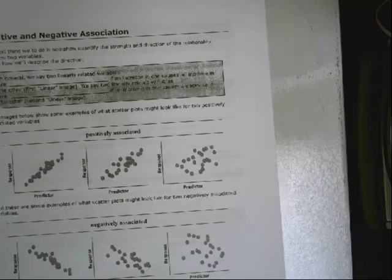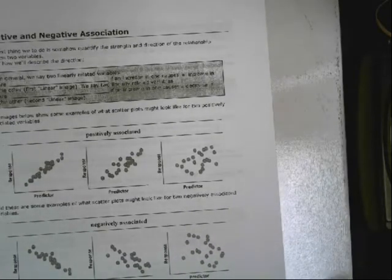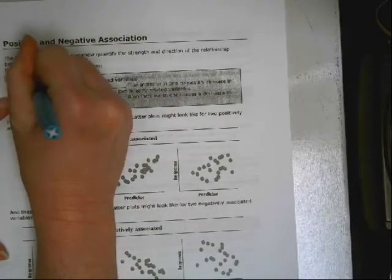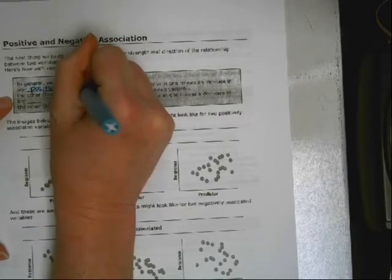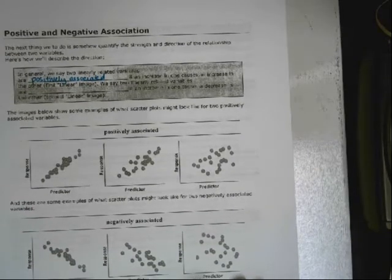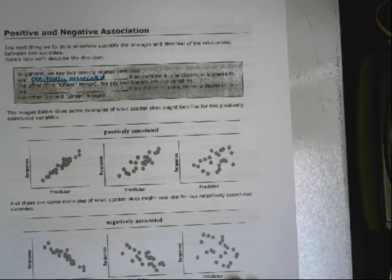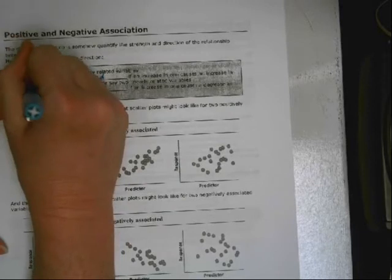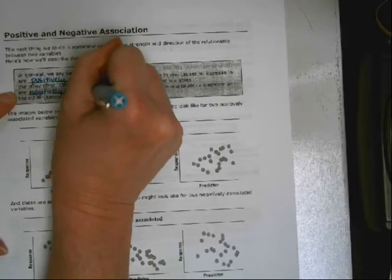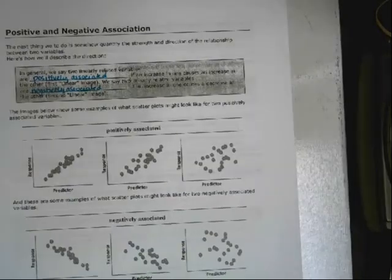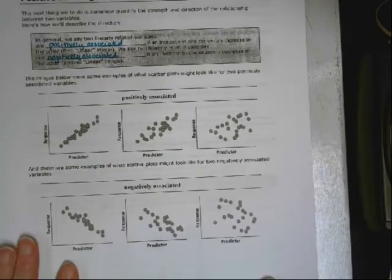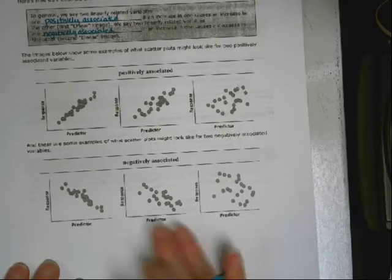Also, on the top of the next page, we have both positive and negative associations. We generally can say that two related variables are positively associated if an increase in one of them causes an increase in the other. So, the first one on the previous page was a positive association, and we can say they are negatively associated.